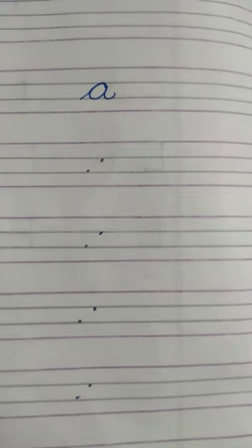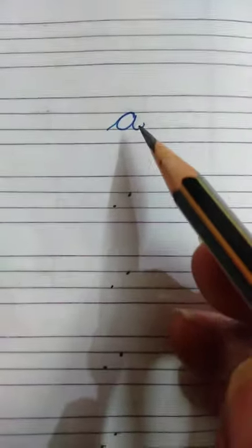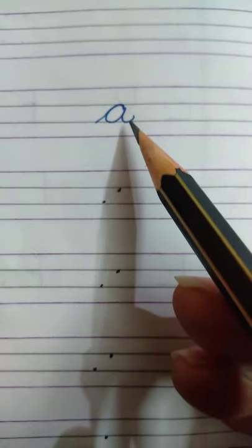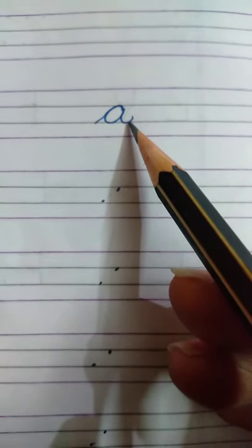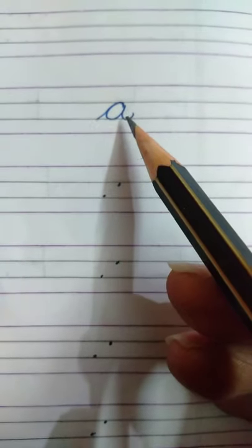Welcome back again and today we'll learn how to make letter A, letter A in small cursive. This is letter A and the phonetic sound of A is A. So short sound A.